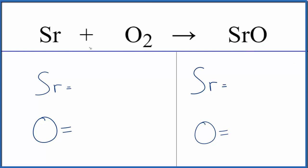So let's first count the atoms up. We have one strontium atom, two oxygen atoms. For products, we have the one strontium and the one oxygen.